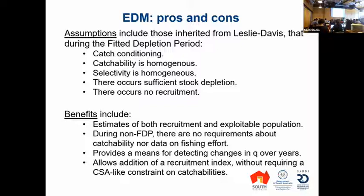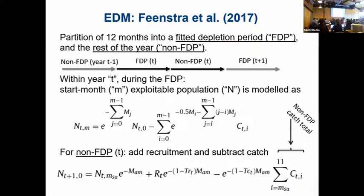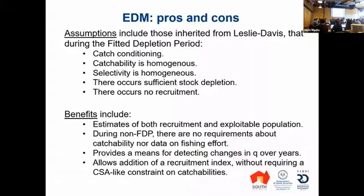It comes with a ton of assumptions — most are carried over from Leslie-Davis. Selectivity also has to be homogeneous as well as catchability. It's catch-conditioned, which is one of the reasons why this works so well. If it were effort-conditioned, you couldn't do this model at all, because you would have to make assumptions about the non-FTP period, and you would have to estimate catchability with no data for it. Remember, this is a data-moderate situation — just catch and effort, and maybe a fixed value for natural mortality.